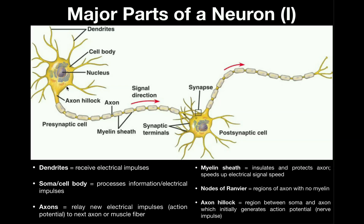If we look at these smaller projections from the cell body — and there's normally a lot of them — these that look like tree branches are called dendrites. Dendrites are important in receiving electrical impulses from other neurons. Dendrites are receivers of information, and when we say information, we generally mean an electrical impulse. The cell body can also receive electrical impulses, but the dendrites typically are what we consider the receiving ends.